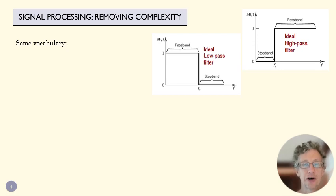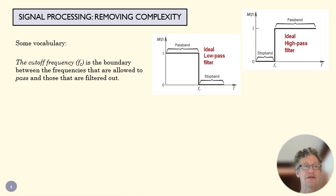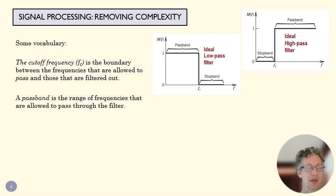Some quick vocabulary about filters. The cutoff frequency is the frequency which divides the frequencies that are allowed to pass from the frequencies that are blocked out by the filter. The passband is the frequencies that are allowed to pass. And the stopband is the frequencies that are not allowed to pass. This is one of those nice cases where we actually name things by what they do.